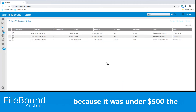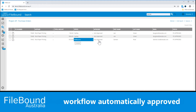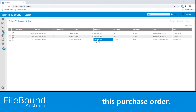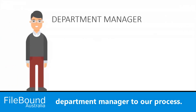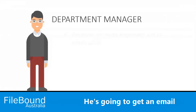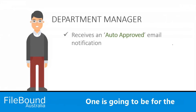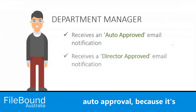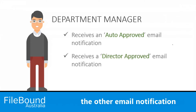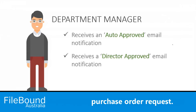As we can see, because it was under $500, the workflow automatically approved this purchase order. So let's welcome back the Department Manager to our process. He's going to get an email notification on a couple of occasions — one for the order approval because it's less than $500, and the other email notification is going to come from the Director approval as soon as they've actioned the purchase order request.